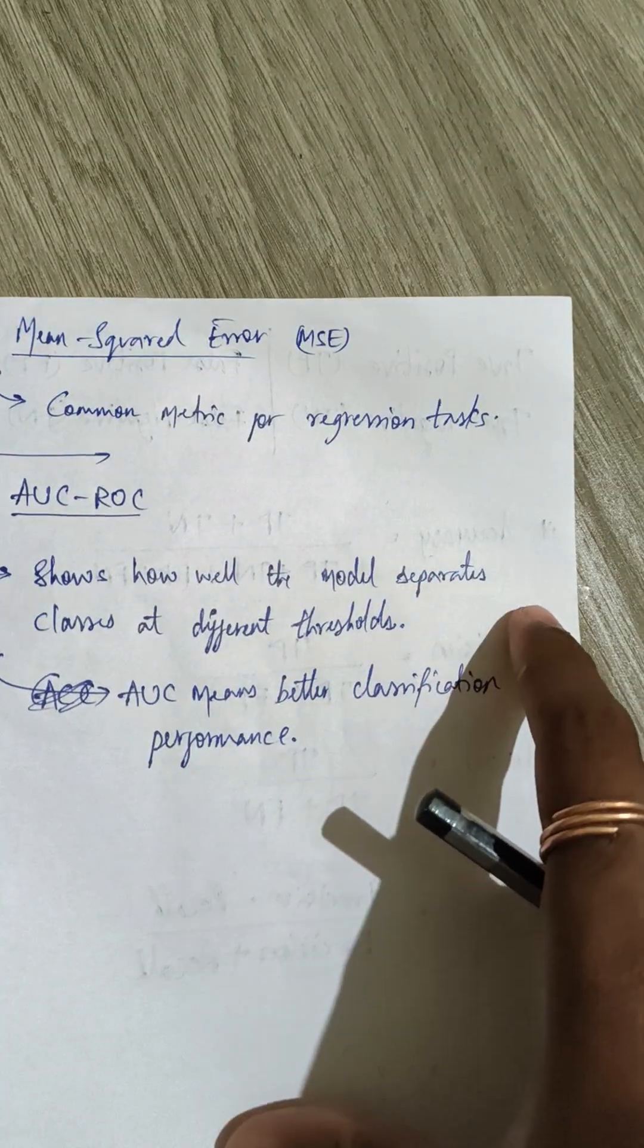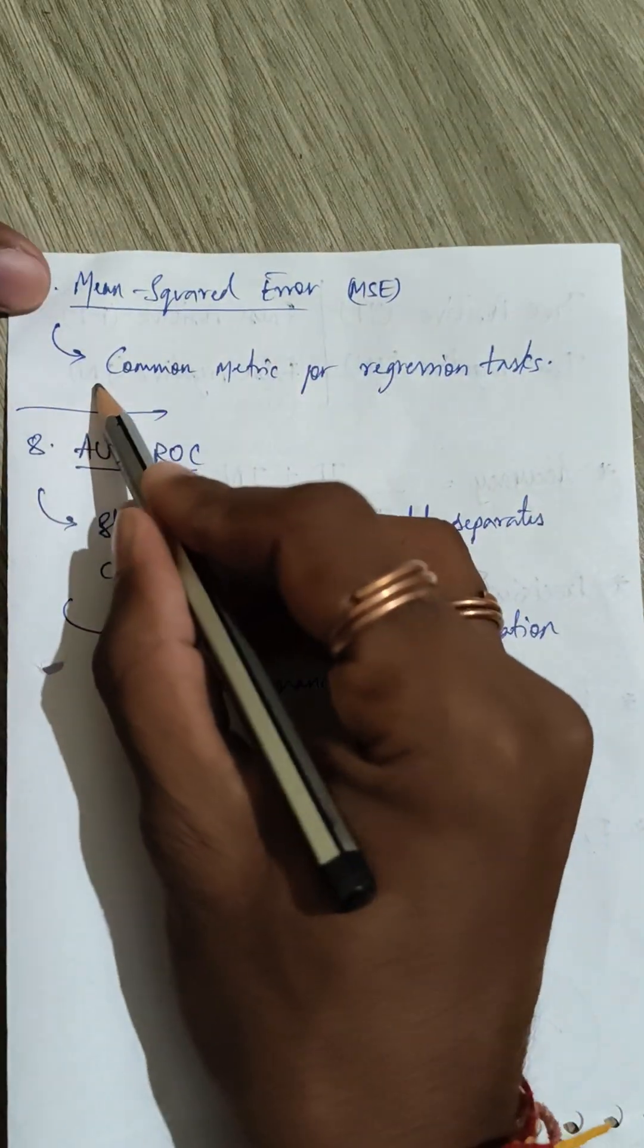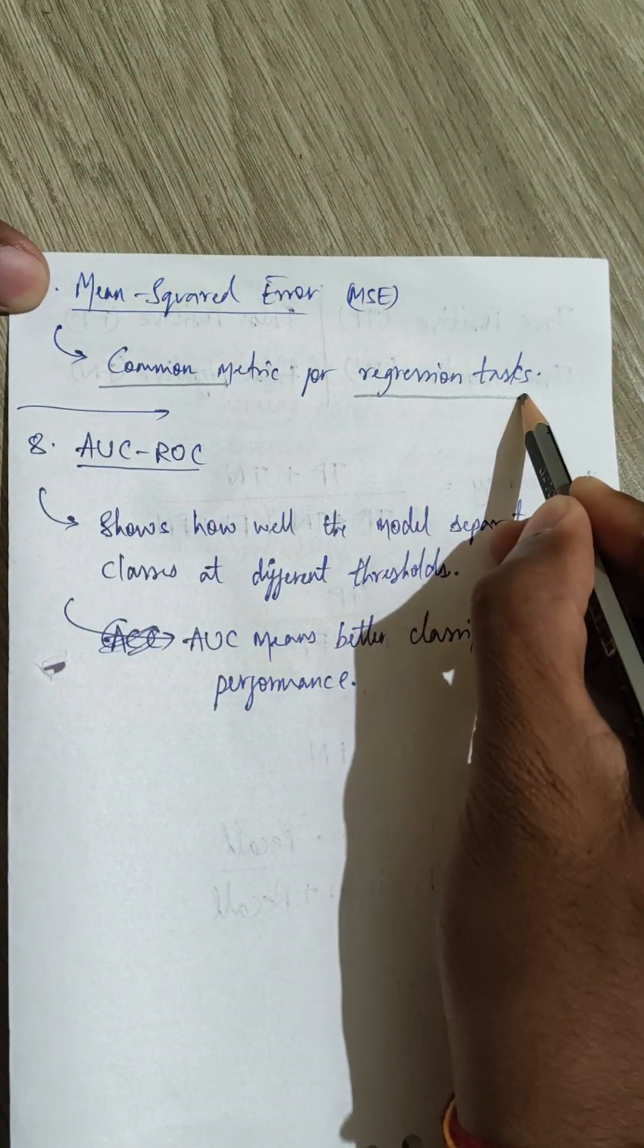Now coming to the mean squared error, also called MSE. This is a common metric for regression tasks.